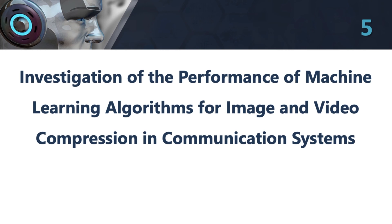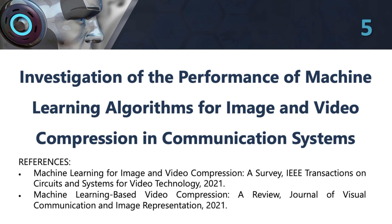5. Investigation of the Performance of Machine Learning Algorithms for Image and Video Compression in Communication Systems. This topic involves exploring the use of machine learning algorithms for image and video compression in communication systems. The project could involve developing new compression algorithms based on machine learning techniques and comparing their performance with traditional compression algorithms. The project could also involve evaluating the impact of different factors, such as image quality and network bandwidth, on the performance of the compression algorithms.